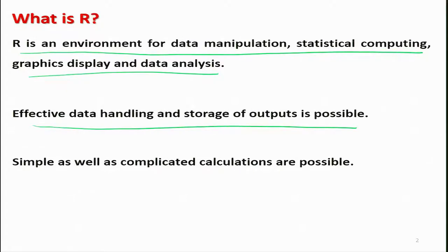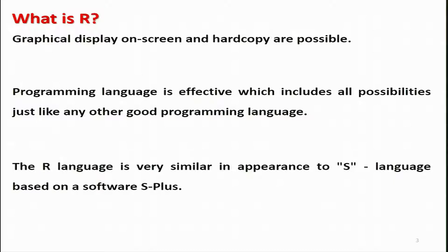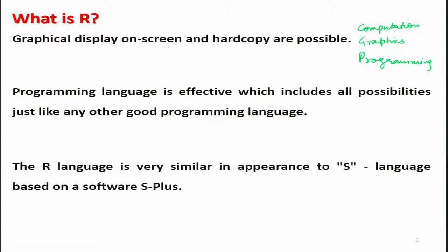When talking about calculations, both simple and complicated calculations are possible in R without any problem. In any statistical or mathematical software, we are usually interested in two things: the type of computation the software can perform, and graphics — meaning whether the software can create different types of graphical displays. We also want to know whether soft copies and hard copies can be saved. Then there is programming — there are two types of software: one based on click-button execution, and another where you type commands at a prompt.